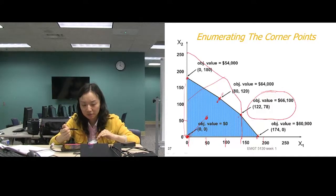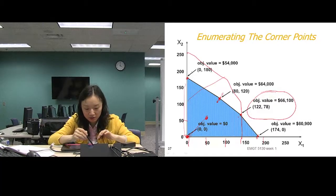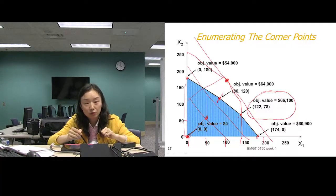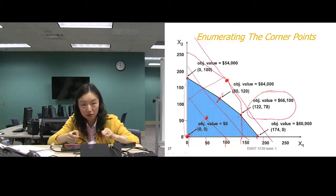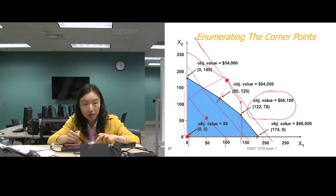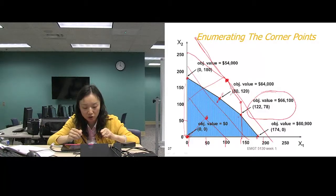If the scale is wrong, your level curve slope might appear to point toward the wrong corner. The slope of the level curve must be compared to the slopes of the constraint boundary lines to correctly identify the optimal corner. Only when your scale is correct can you reliably identify which corner point is optimal.